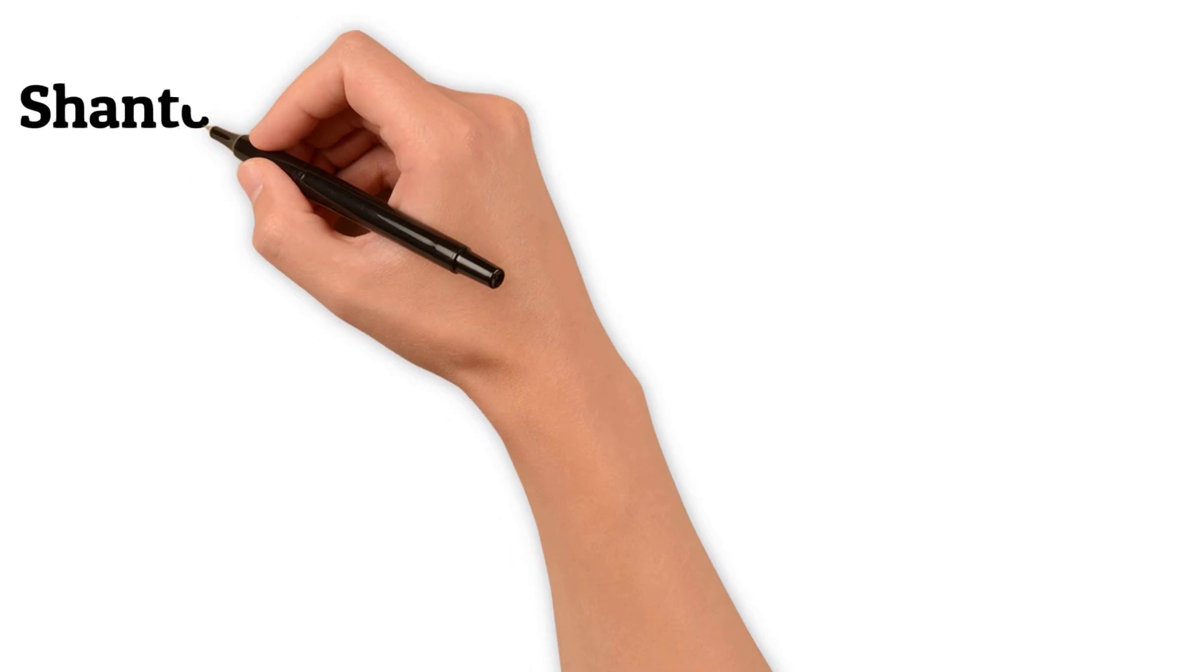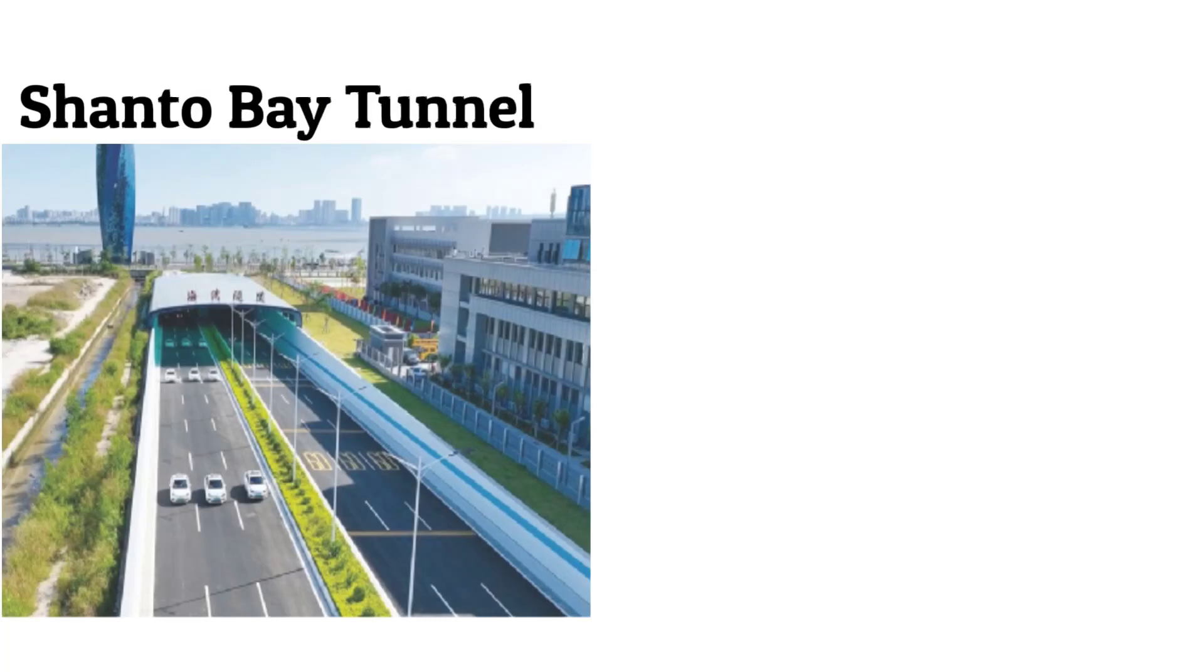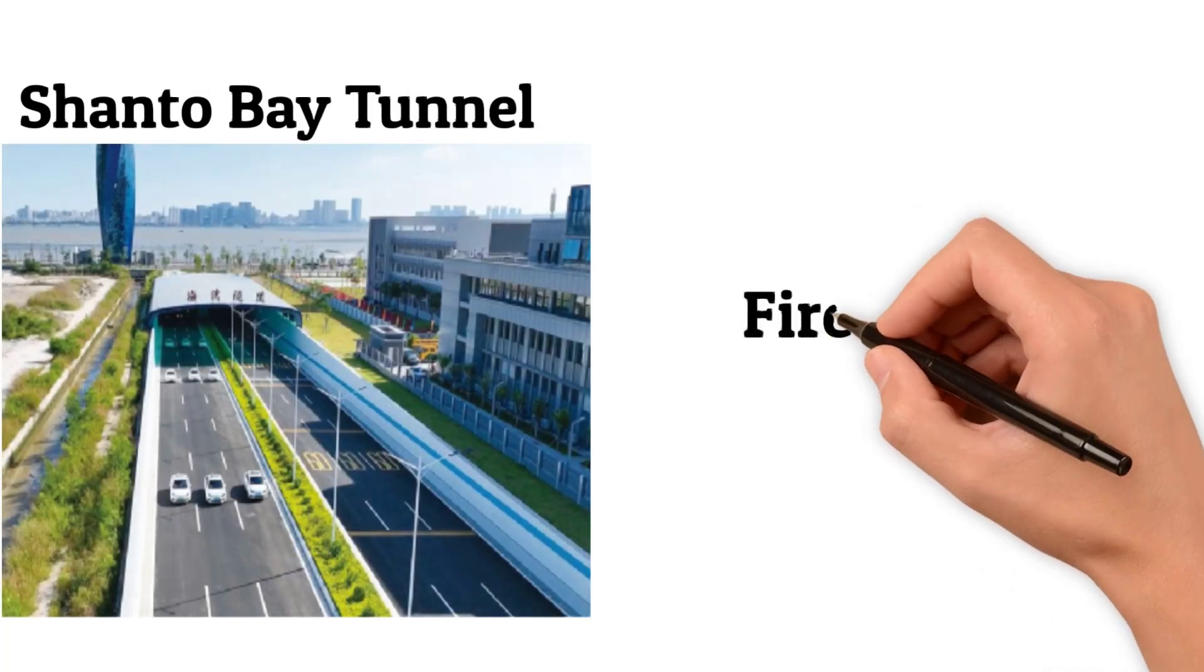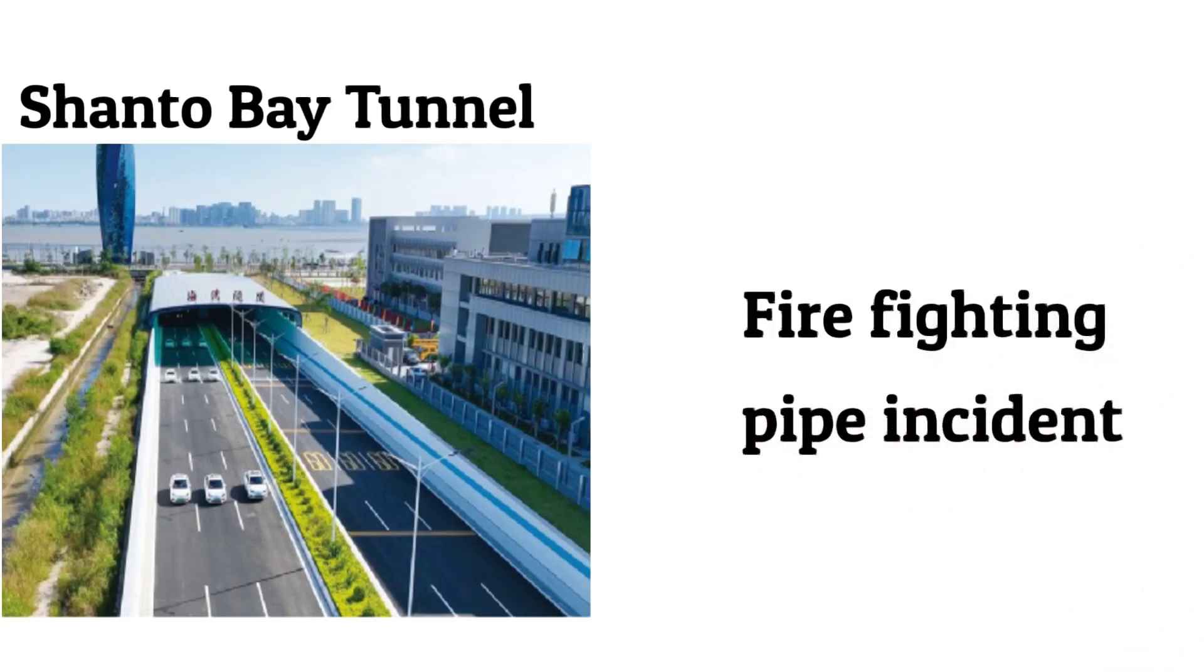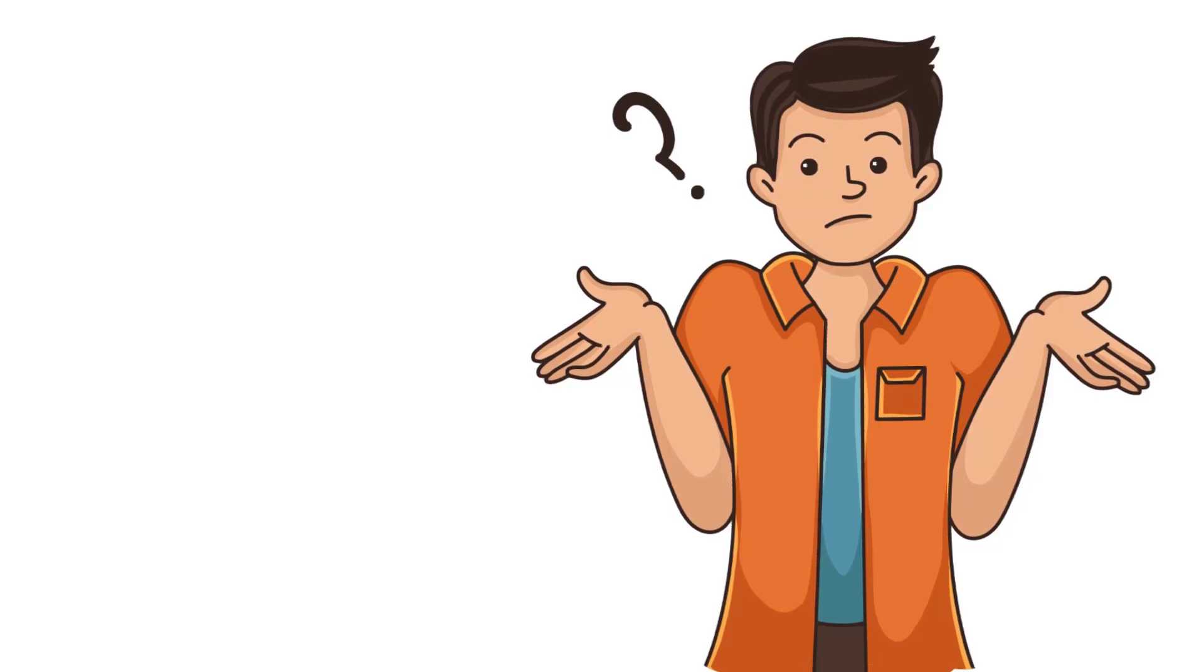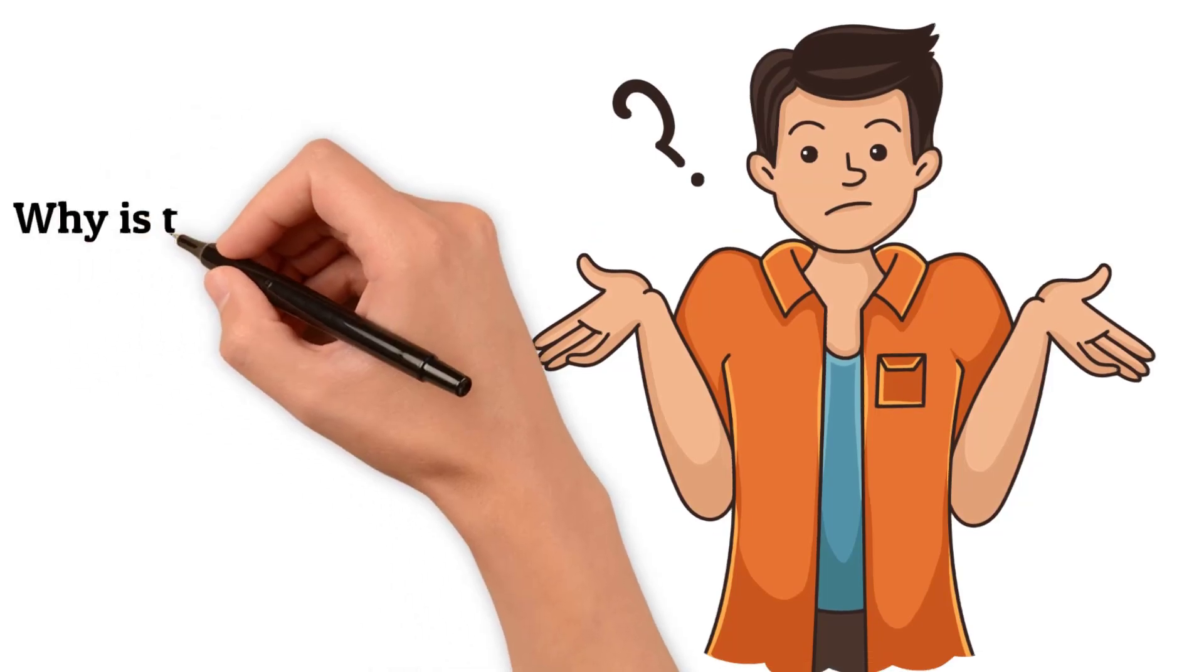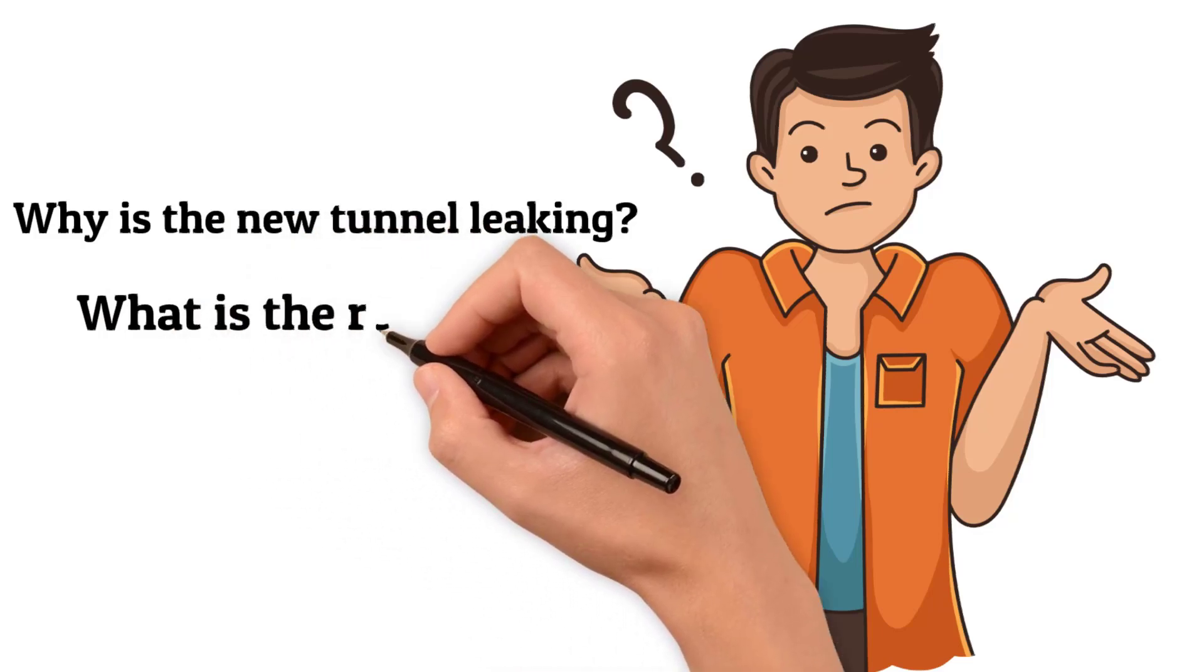The Shantou Bay Tunnel in just a year and a half has become a hot topic thanks to some unexpected waterworks. According to the powers that be, a firefighting pipeline mishap around the 2,400-meter mark on the tunnel's western side is to blame, gushing clean water in from the sidewall. But of course, there are still skeptics questioning how such a new tunnel could spring a leak so soon and pondering the quality of the construction materials.